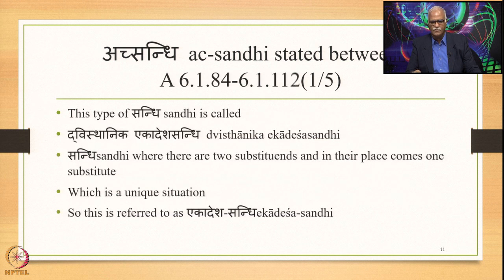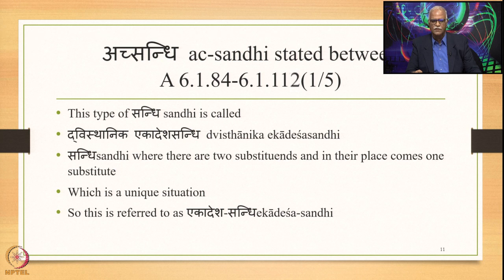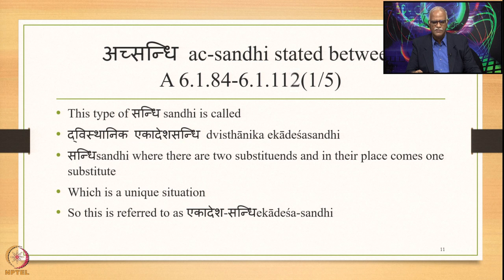The second type of Sandhi, stated from 6.1.84 up to 6.1.113, is called Dvisthanika Ekadesha Sandhi. This Sandhi has two substituents — Dvisthanika — and in their place comes one substitute — Ekadesha. This is a very unique and peculiar situation, which is why this Sandhi is generally referred to as Ekadesha Sandhi: two substituents and one substitute.